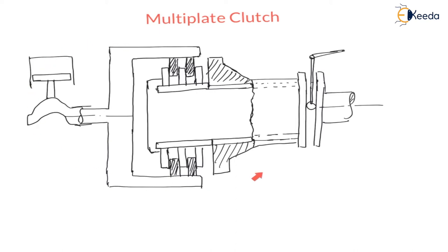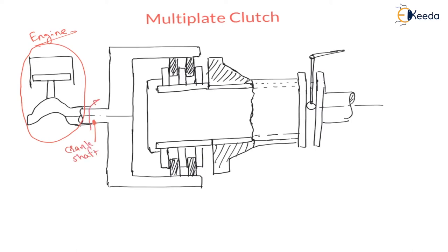Here the schematic of Multi-Plate Clutch is shown. It is an engine arrangement with a cylinder, piston, piston rod, connecting rod, and crankshaft — this total assembly is considered as the engine, which you will see in the IC engine topic in thermodynamics. The crankshaft rotates with some angular velocity omega and is connected to the flywheel, where energy is stored. The purpose of the flywheel is to store excess energy produced by the engine and supply it whenever required for other parts of the machine element.